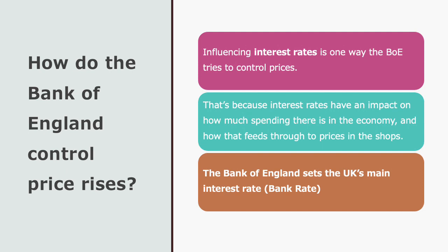So how does the Bank of England control price rises? When you've got huge inflation and prices are going up, the Bank of England can influence interest rates to help. Interest rates have an impact on how much spending there is in the economy and how that feeds through to prices in the shops. The Bank of England sets the UK's main interest rate — the bank rate.